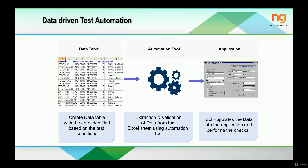Our automation tool, such as Robot Framework, will extract the data from the sheet and populate it into the application. In this slide, you can see a data table created which identifies data based on different test conditions — it extracts and validates the data from the Excel sheet inside the automation tool, and the tool populates the data into the application and performs the check. This is known as data driven framework because for one test case we have multiple sets of data. We will have practical sessions in further videos for hands-on practice with data driven test automation.